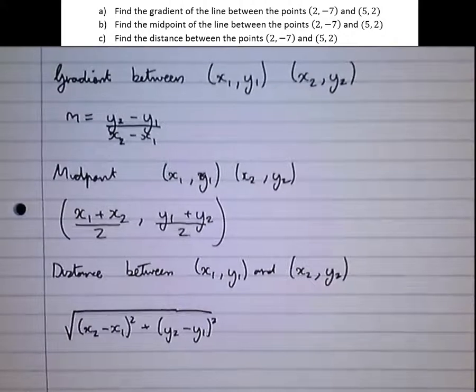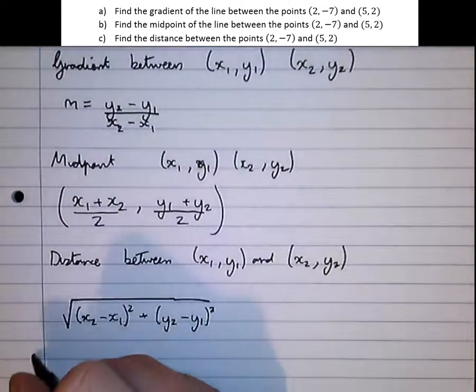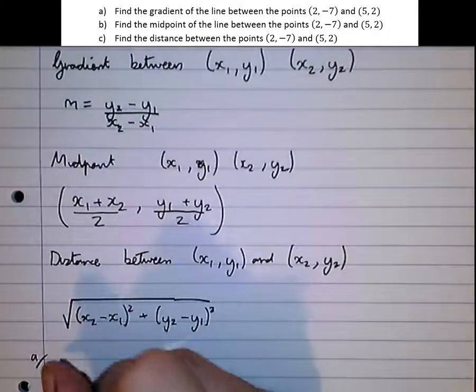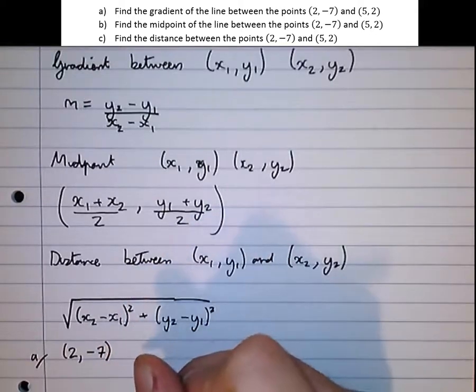So let's use this now to do a couple of questions. So let's have a look at part A. Part A here, find the gradient of the line between the points 2, minus 7, and 5, 2.